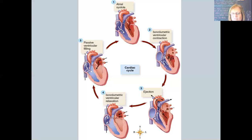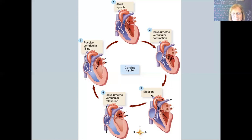In the ventricular relaxation phase, the right and left atria begin to fill, and the coronary circulation is also taking place. The final part of the cardiac cycle is passive ventricular filling — even before the contraction of the right or left atrium, blood begins to passively flow into the ventricles. Then we go through the whole cycle again.